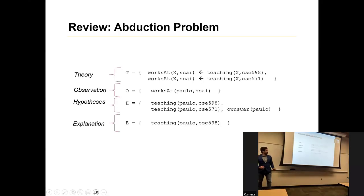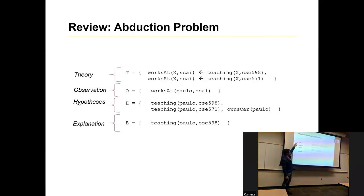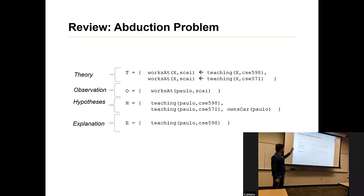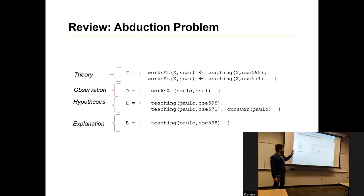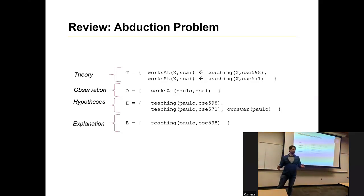Just a very quick review from our abduction lesson. With an abduction problem, you have a theory, you have an observation, and a set of hypotheses. Your explanation is some subset of those hypotheses that can explain the observations, is consistent with the theory, and also minimizes some parsimony requirement — some sort of objective function dealing with the simplicity of the solution.